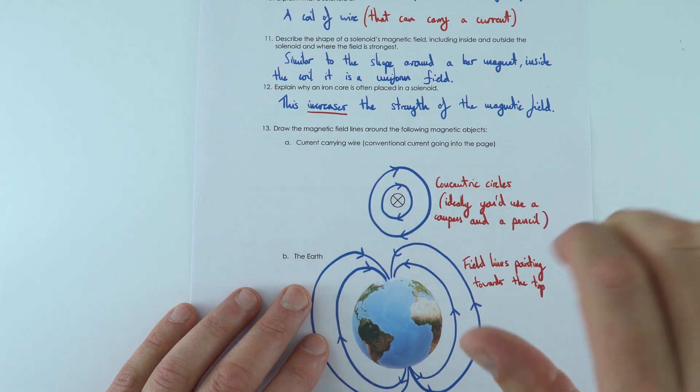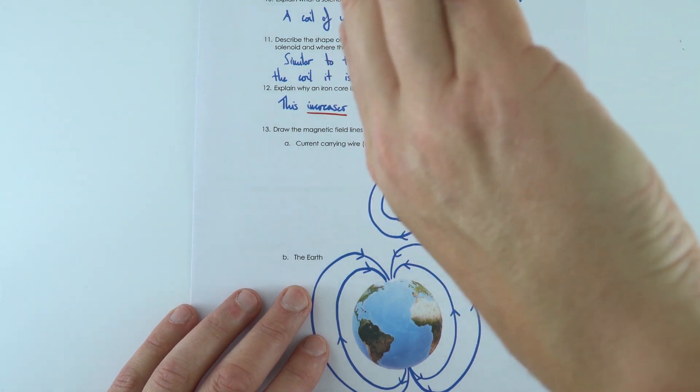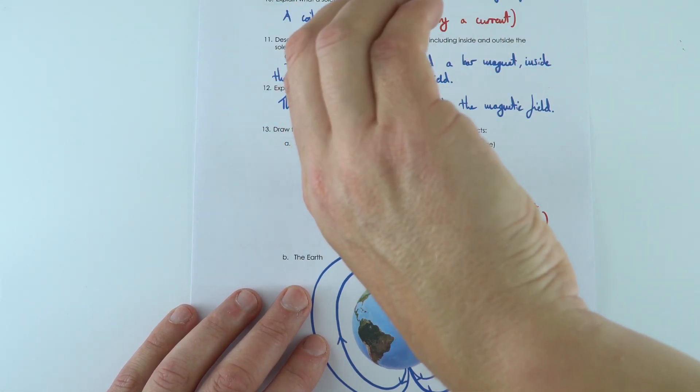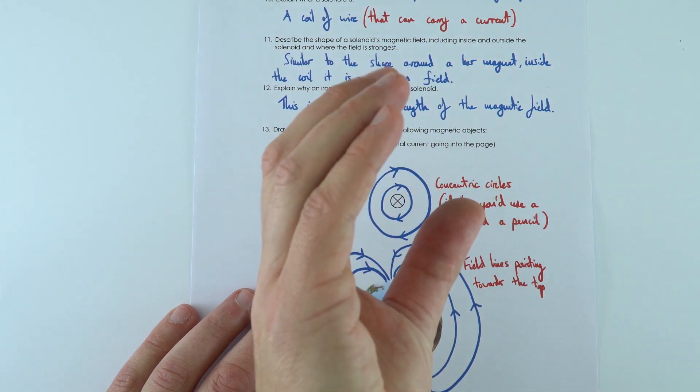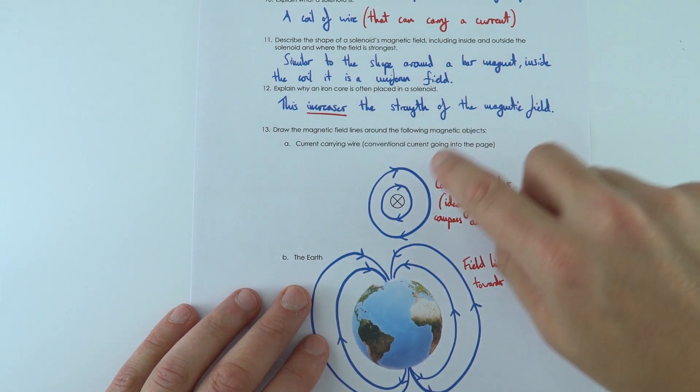And to work out the direction I put these arrows on, I use my right hand, I put my thumb pointing in the direction of the current into the paper. And that means we have these clockwise field lines.